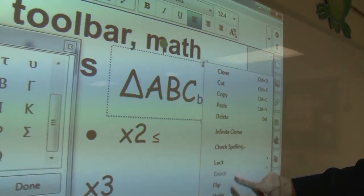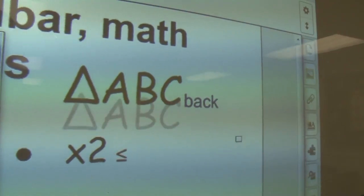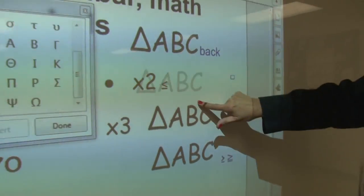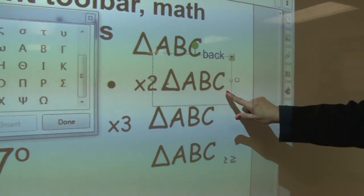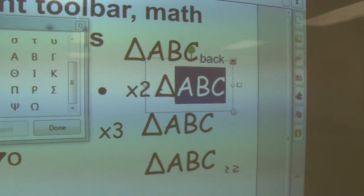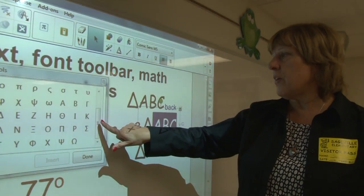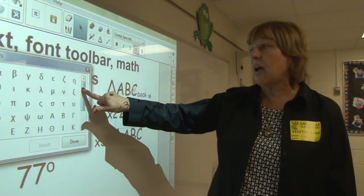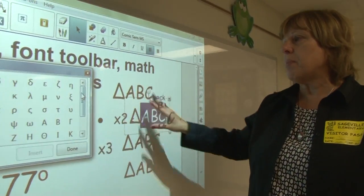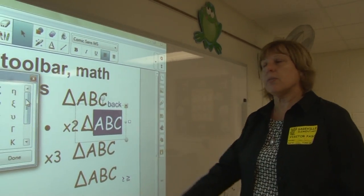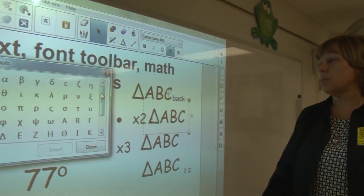And much like I did with the degrees, if I were doing lots of triangles, I would want to infinitely clone that so that now I can pull lots of triangles off. Then the only thing I need to do is go in and change the letters, and I wouldn't have to keep going back in to get the symbols. The triangle symbol is the only one that probably at the lower grades you would use.